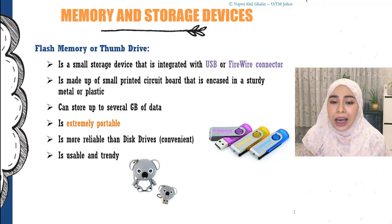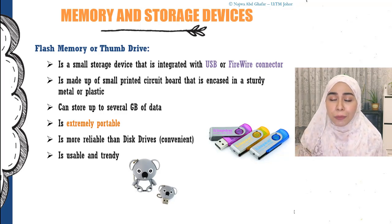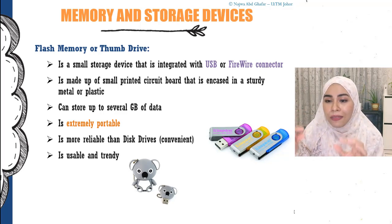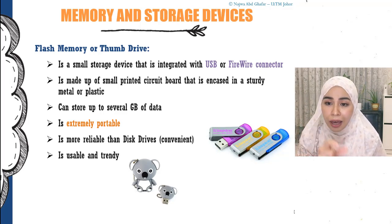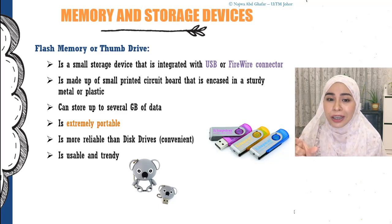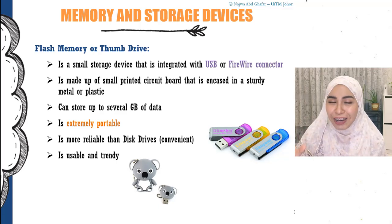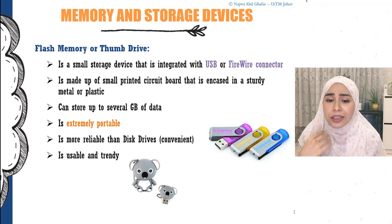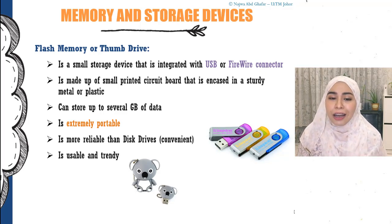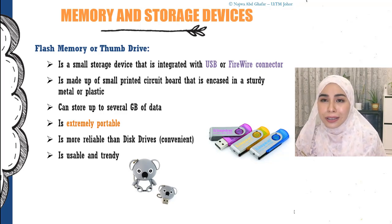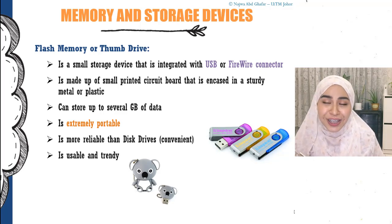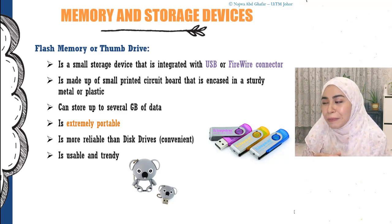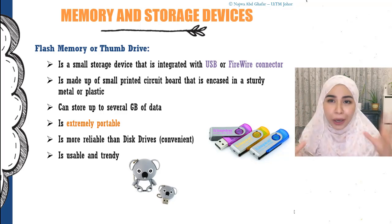Flash memory or thumb drives are the most convenient type of storage. This small portable device can be brought everywhere to transfer files between computers. Inside the casing is a memory chip, connected to the computer via USB. A thumb drive can store up to several gigabytes of data. It is extremely portable, reliable, and convenient — you can carry it in your pocket. Flash memory designs also come in many different styles and casings.